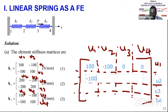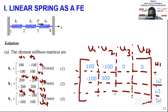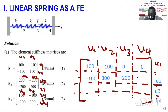Moving to the second row: u1-u2 is -100 from K1. For u2-u2, K1 contributes 100 and K2 contributes 200, giving 100+200 = 300 by superposition. For u3-u2, from K2 we get -200, so that cell is -200. For u4-u2, u4 only appears in element 3 and there is no u2 term there, so that cell is zero.